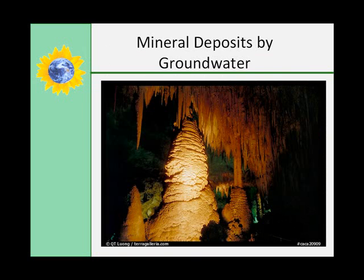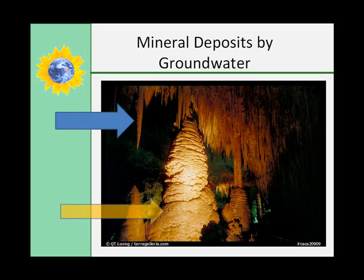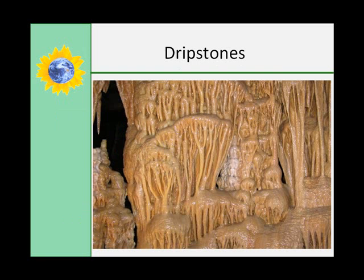The minerals dissolved in groundwater are deposited in a variety of ways. Groundwater drips from the roof of a cave, slowly depositing calcite in the form of icicles hanging from the roof — called stalactites, which hold tight to the ceiling. On the floor below the stalactites, blunt round masses called stalagmites are formed — they might rise from the floor. When stalactites and stalagmites meet, columns or pillars are formed. These are called dripstones. Around the openings of geysers, geyserite is deposited — silica dissolved from hot igneous rock.